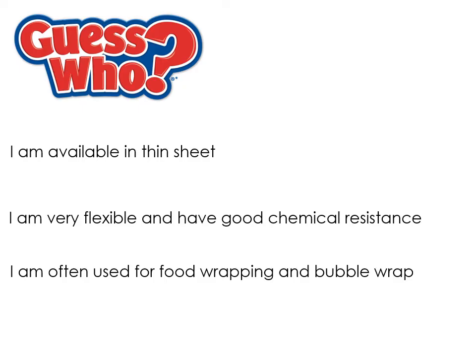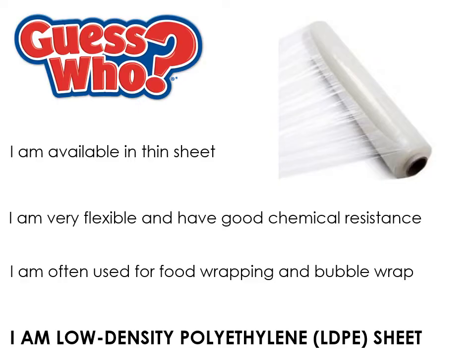Low density polyethylene is available in very thin sheet. The process for making it is called calendaring, where the material passes through rolls that gradually squeeze it thinner and thinner. It's very flexible, has good chemical resistance, and is often used for food wrapping and bubble wrap. It's not good for the environment as it comes from crude oil — a finite source — though it can usually be recycled relatively easily.